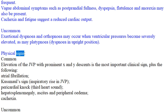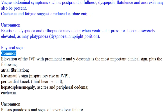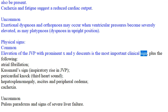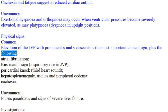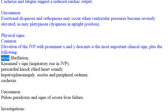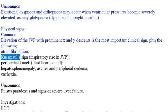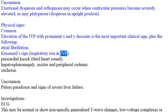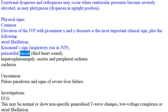Physical signs — Common: Elevation of the JVP with prominent X and Y descents is the most important clinical sign. Atrial fibrillation, Kussmaul's sign (inspiratory rise in JVP), and pericardial knock (third heart sound) are also noted.